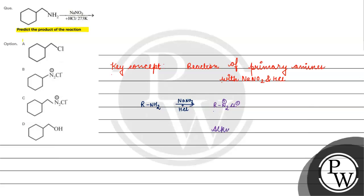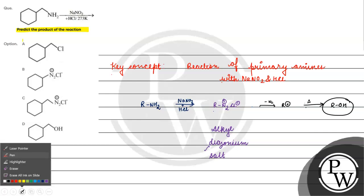The alkyl diazonium salt will release nitrogen gas and form an alkyl carbocation. Then, at high temperature or in the presence of water, we have the formation of an alcohol.